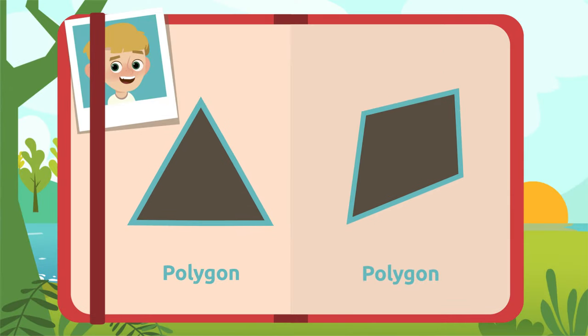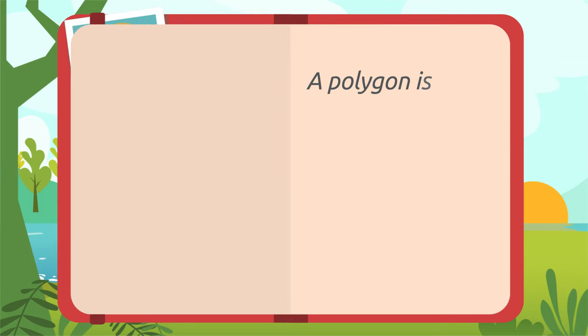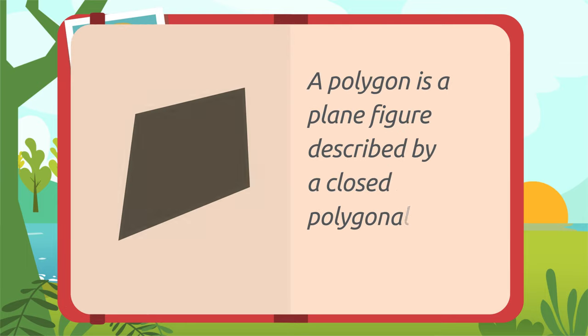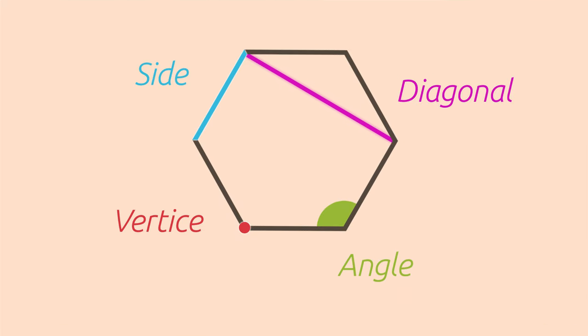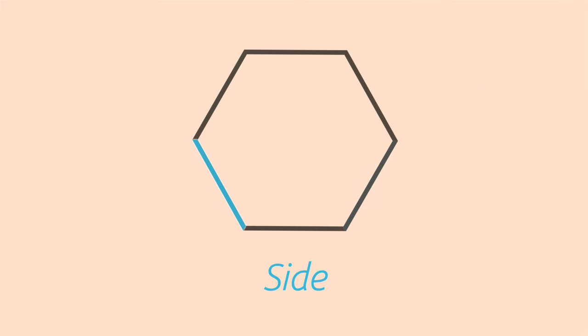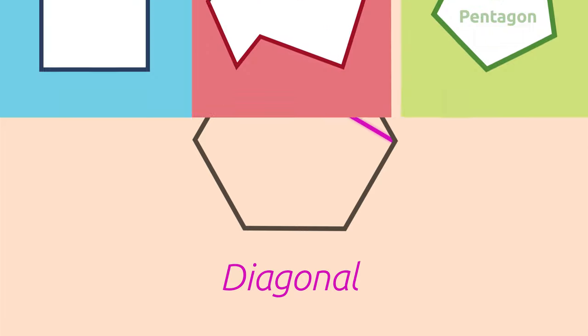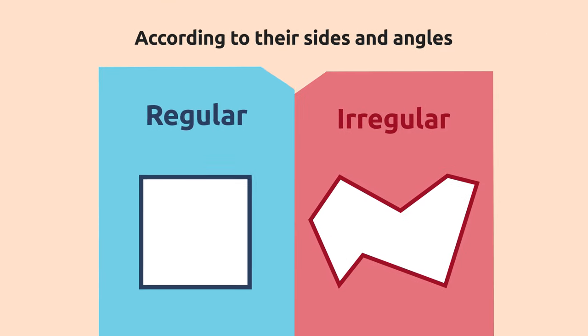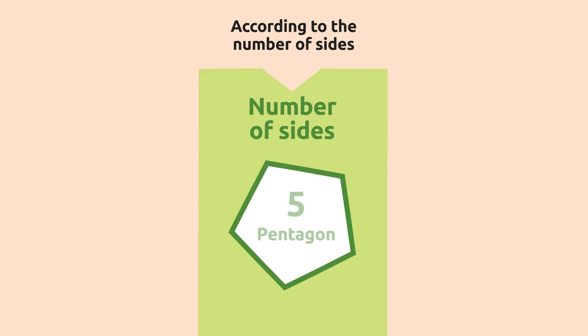Let's recap everything we learned about polygons. They are plain figures described by a closed polygonal line. They are formed by parts: sides, vertices, angles, and diagonals. They can be classified as regular or irregular, and also depending on the number of their sides.